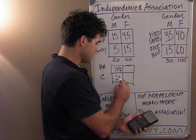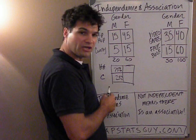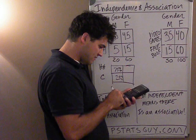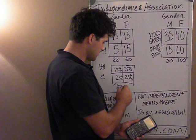So look how the men are distributed: 75% like hip-hop and 25% like country. Let's look at the females now. 45 out of 60 — 45 divided by 60 — 75%, which means 25% must be here because they all add up to 100%. So here's the question.